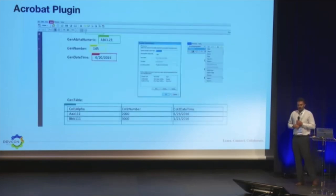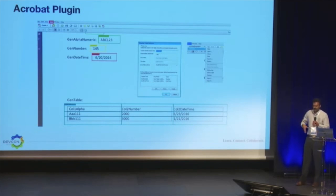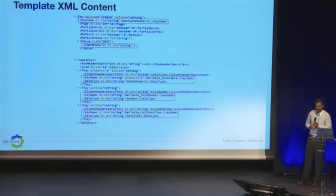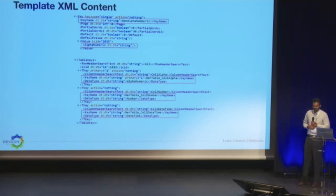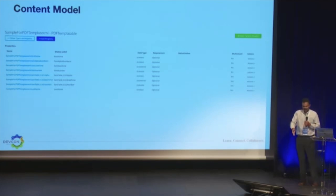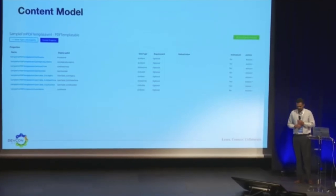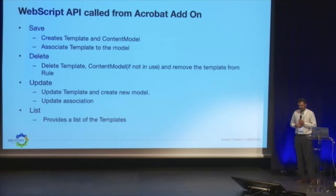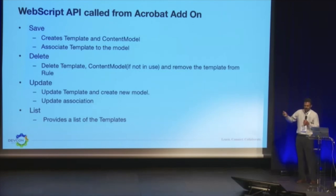The template setup is an add-on on top of Adobe Acrobat. You open a PDF document, specify the regions declared by the user, then select a key name for those regions. Once done, the template is saved into Alfresco Content Services and it automatically creates a content model. You then create a rule for a particular folder, and when you upload PDF documents to that folder, the metadata is automatically extracted and saved as a property. The Adobe Acrobat plugin UI shows the selected regions — supported data types are alphanumeric, number, date, time, and table.